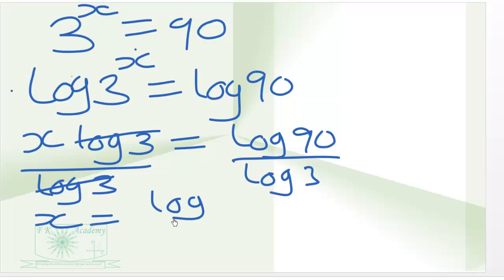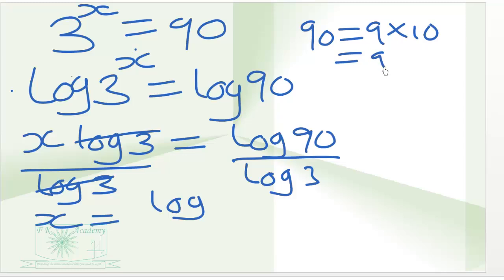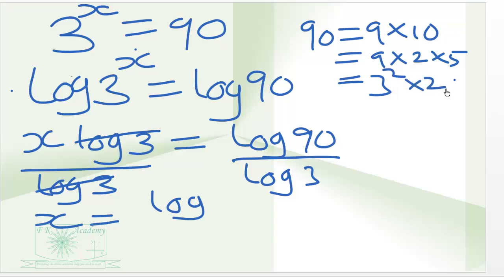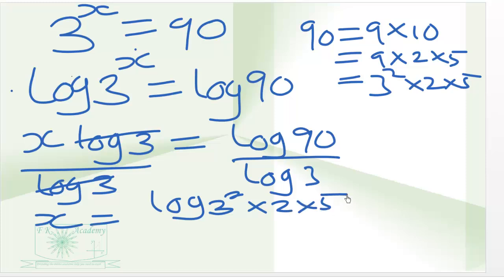We can express 90 as a product of prime factors. So 90 is equal to 9 times 10, which is the same as 9 times 2 times 5, which is the same as 3 squared times 2 times 5. So this becomes log of 3 squared times 2 times 5, over log 3.